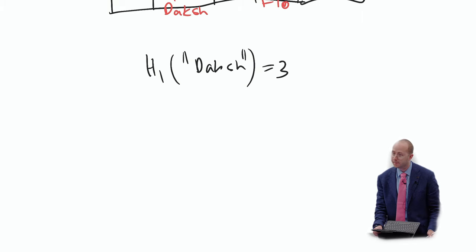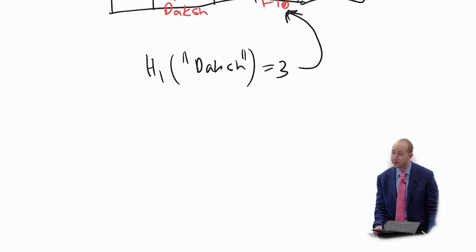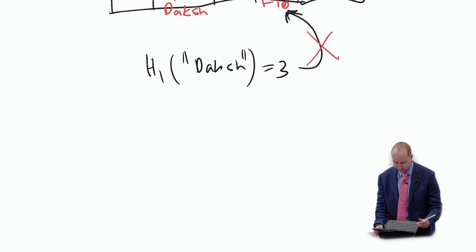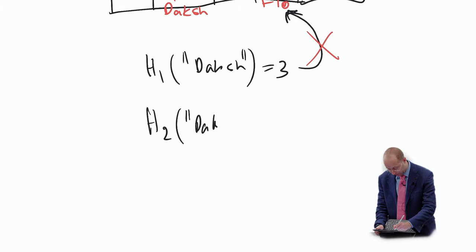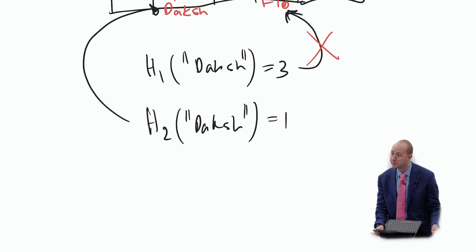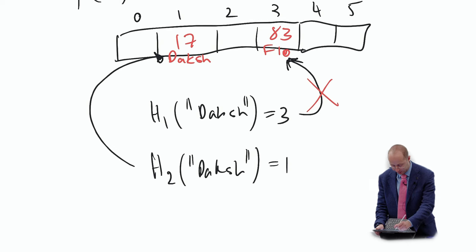Here's a worked demo: Ahmed gets hashed to index one. Kunal also hashes to index one, but that space is taken, so we use h2 to figure out where to put Kunal. Our expected runtime for this is O(1 + alpha), where alpha is a factor associated with how heavily the array is loaded — defined as the load factor.